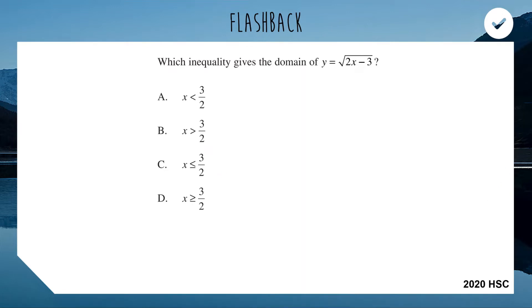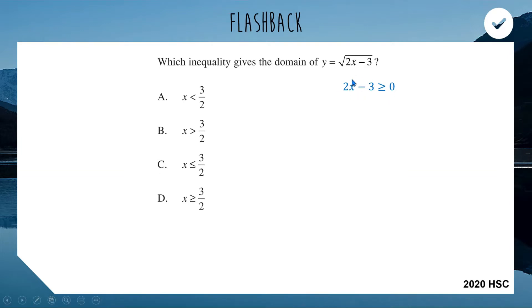To answer this correctly, we need to think about the domain — the x values we can substitute into our function to get real answers. Because we have 2x minus 3 inside a square root, we need 2x minus 3 to not be negative. So we say 2x minus 3 is greater than or equal to zero, then solve by adding 3 across and dividing by 2.